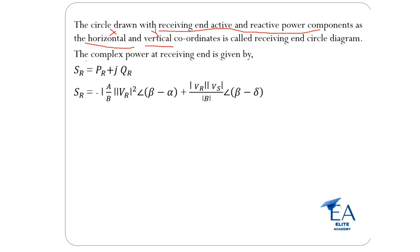Before analyzing the steps to draw the receiving end circle diagram, we need to find out the radius of that circle and the X and Y coordinates of its center. Therefore, there is a short derivation. Let's see how we can derive the formula for radius, X coordinate, and Y coordinate. For that purpose, SR, the complex power at the receiving end, is SR equals PR plus jQR.